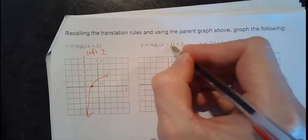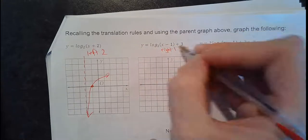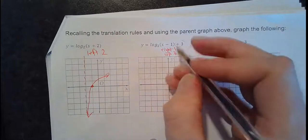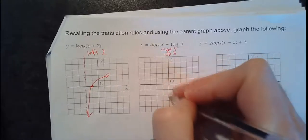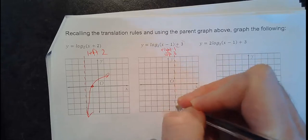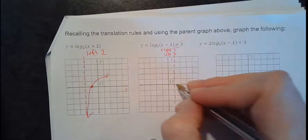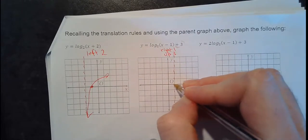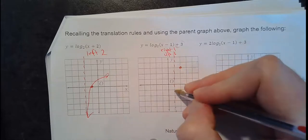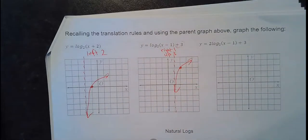This next one has a minus 1 with the x — that's right 1. And there's a plus 3 on the end — that's up 3. So my vertical asymptote was at x equals 0, now it's going to be right 1. Shifting the asymptote up doesn't make a visible difference, so that doesn't change anything. But my special point goes right 1 and then up 3, and I go up through it and shoot off to the right like that.